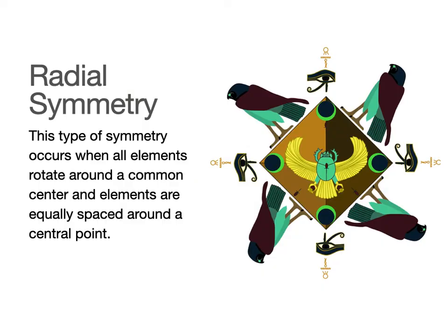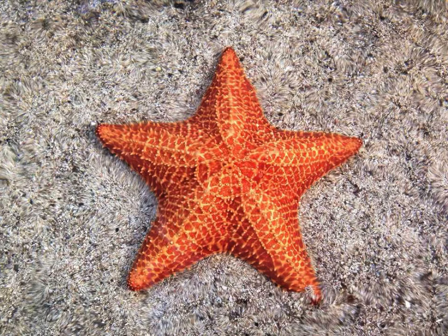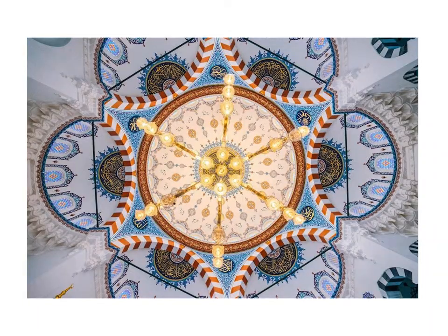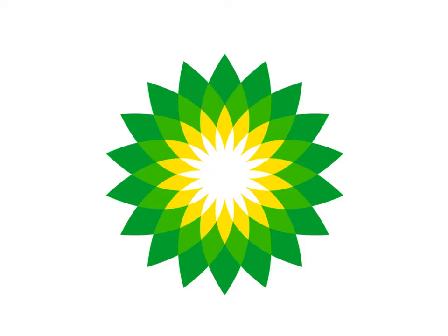Radial symmetry is the third type — elements rotate around a common center and are equally spaced around a central point. It's less about a line down the middle and more about a point right in the center. It's a good example for logos, though you don't see radial symmetry all that often.